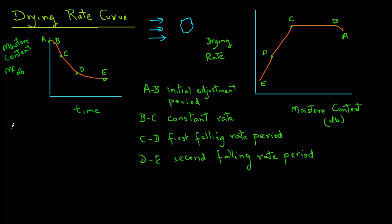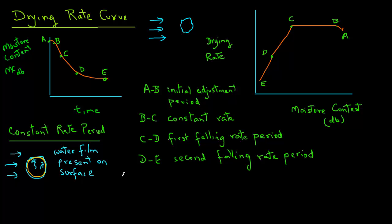So let's look at the constant rate period. In this case, when a moist sample is placed in a stream of air, there is always a water film present on the surface of that object. This is because there is sufficient amount of water inside the food that can easily transfer to the surface and the surface is always covered with a layer of water. So this period when the water is evaporating from the surface and that water is freely available throughout the surface of that object is the constant rate period.